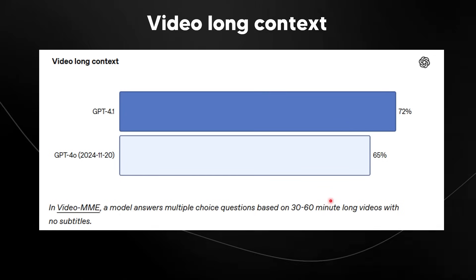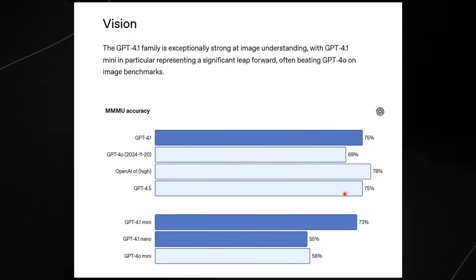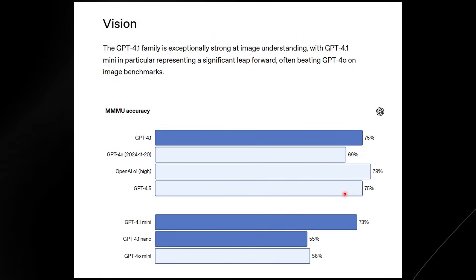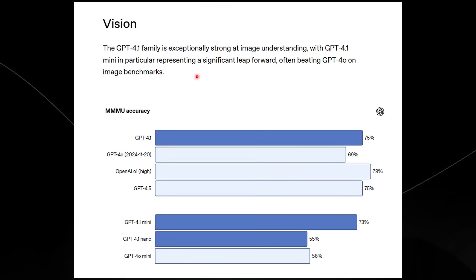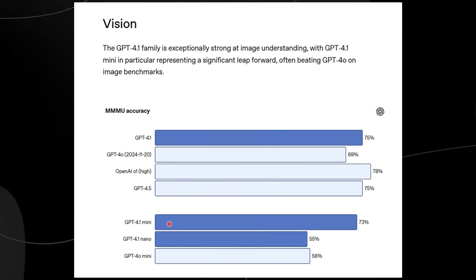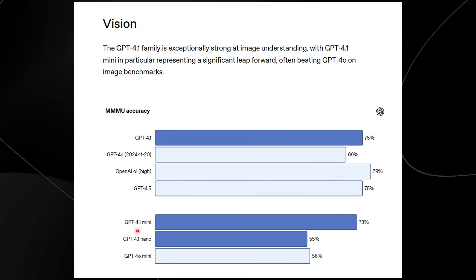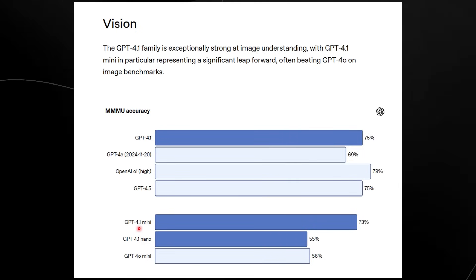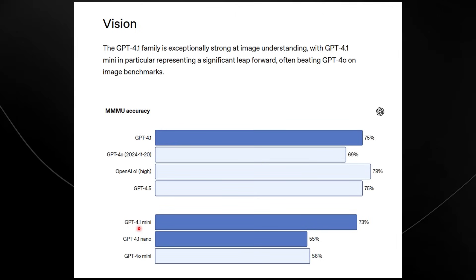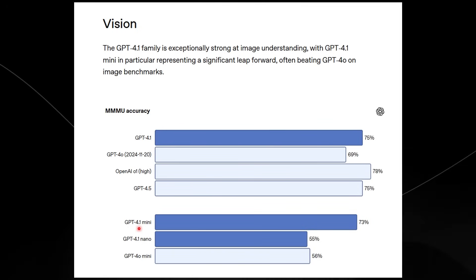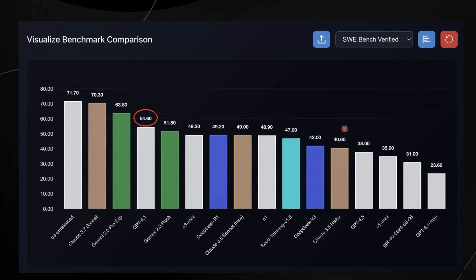On the vision bench, GPT-4.1 isn't excelling in ridiculous areas. For those building applications with vision, GPT-4.1 Mini looks to be the popular choice — scoring 73 on the MMMU benchmark, basically similar to GPT-4.1 in vision capabilities but at a fraction of the cost.